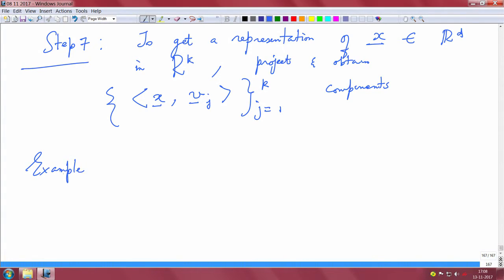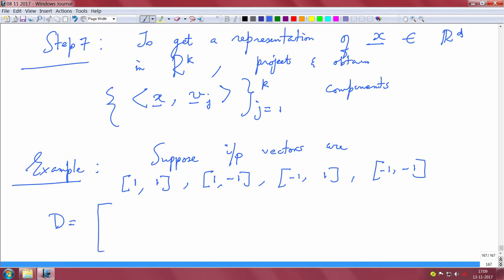To get you a feel, suppose input vectors are [1,1], [1,-1], [-1,1], and [-1,-1]. If I do my data matrix, I will get [1,1; 1,-1; -1,1; -1,-1]. Obviously, you can compute the mean, and that is [0,0]. You just average it out, you get 0 and 0. You formulate your covariance matrix. You land up with something like this. I would want you to verify this by hand. You can do this calculation offline.